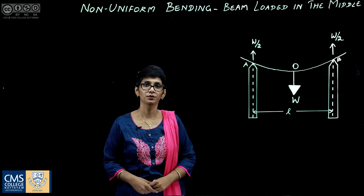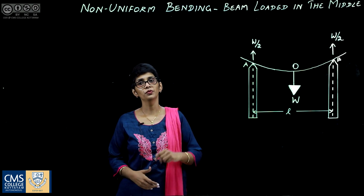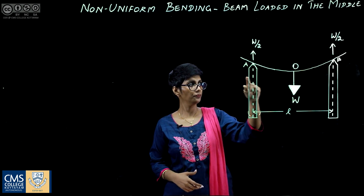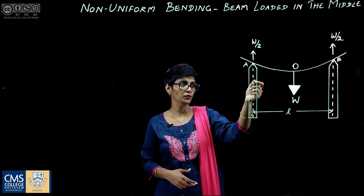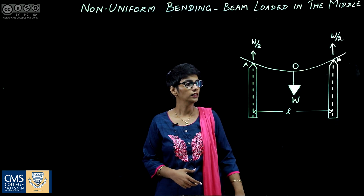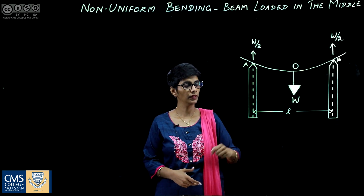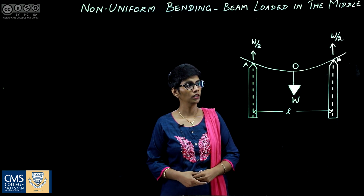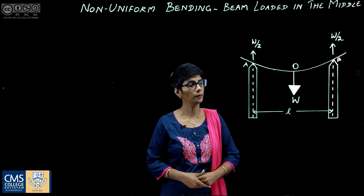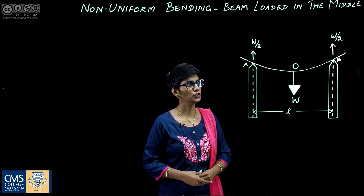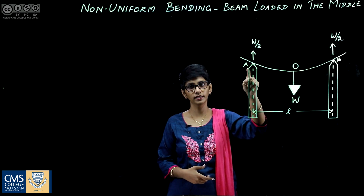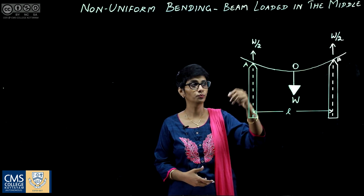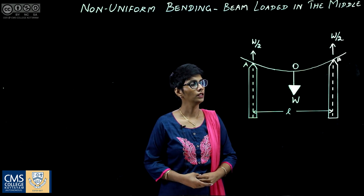In this video we are going to see non-uniform bending — a beam loaded in the middle. We consider a beam kept between two knife edges A and B, with the distance between them being L. A weight W is placed at the center, causing the beam to bend. There is a reaction at the two knife edges which acts vertically upwards, and the reaction is W/2.